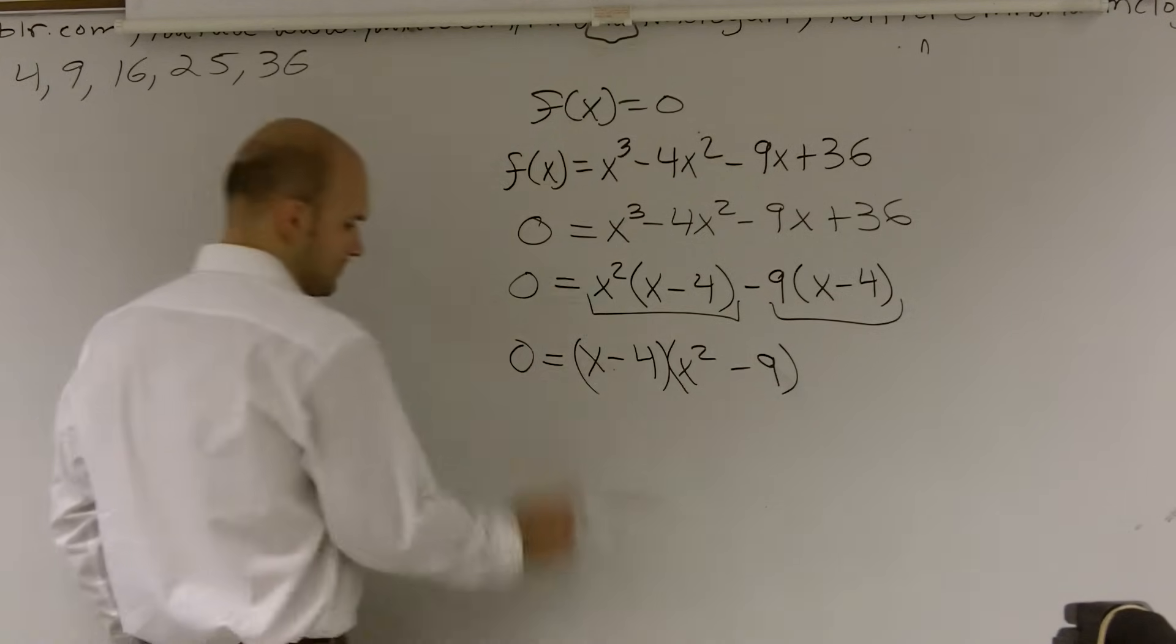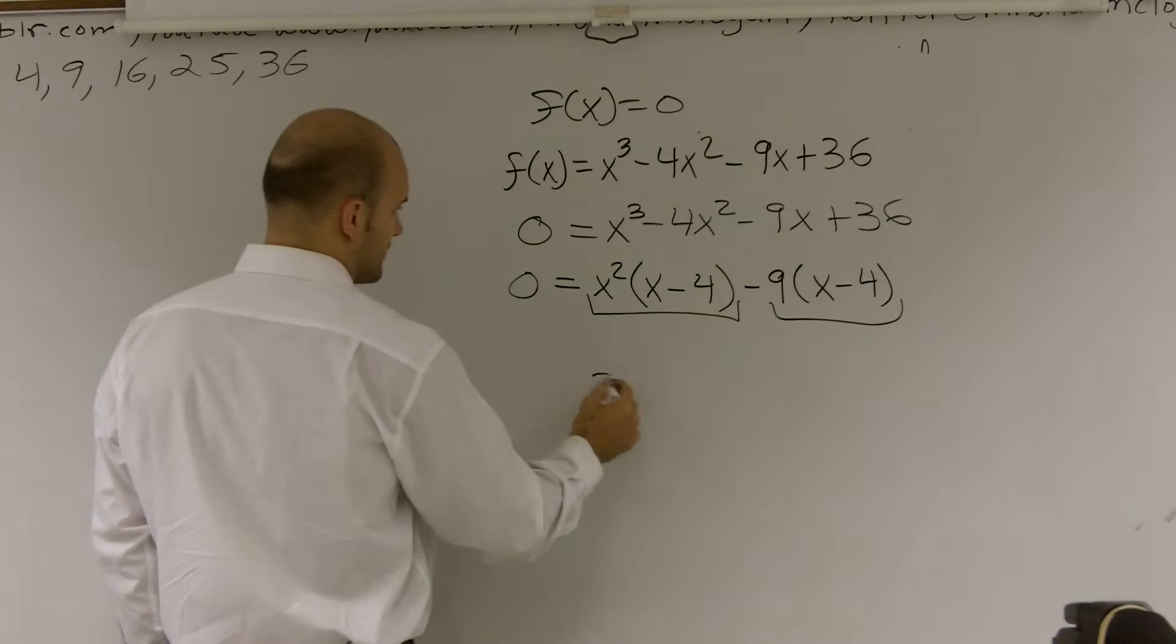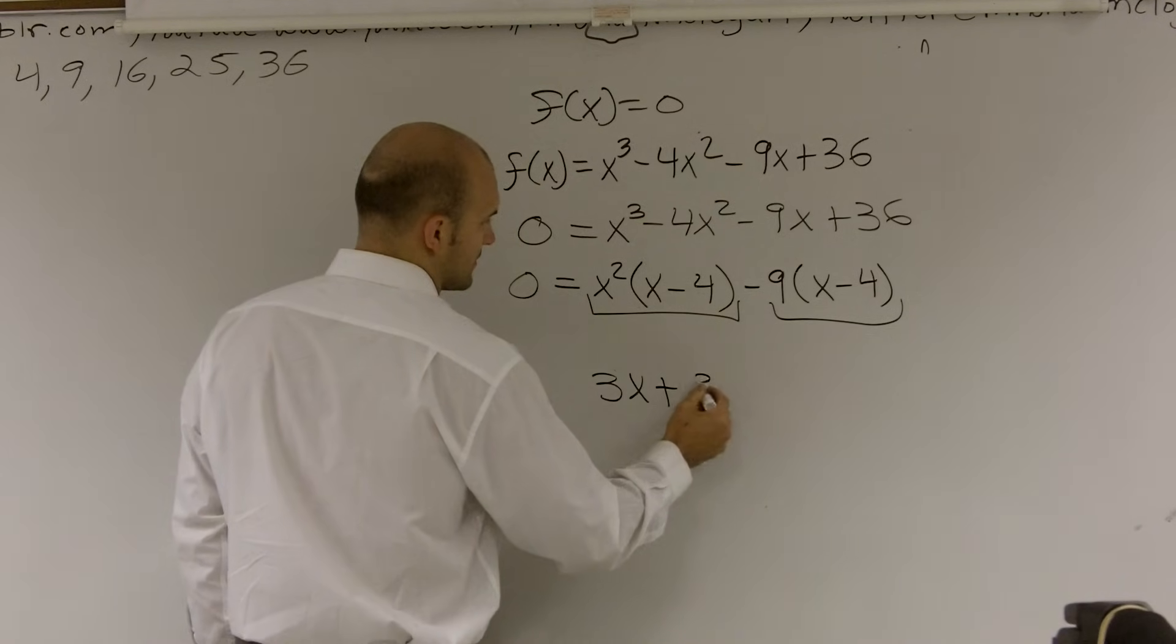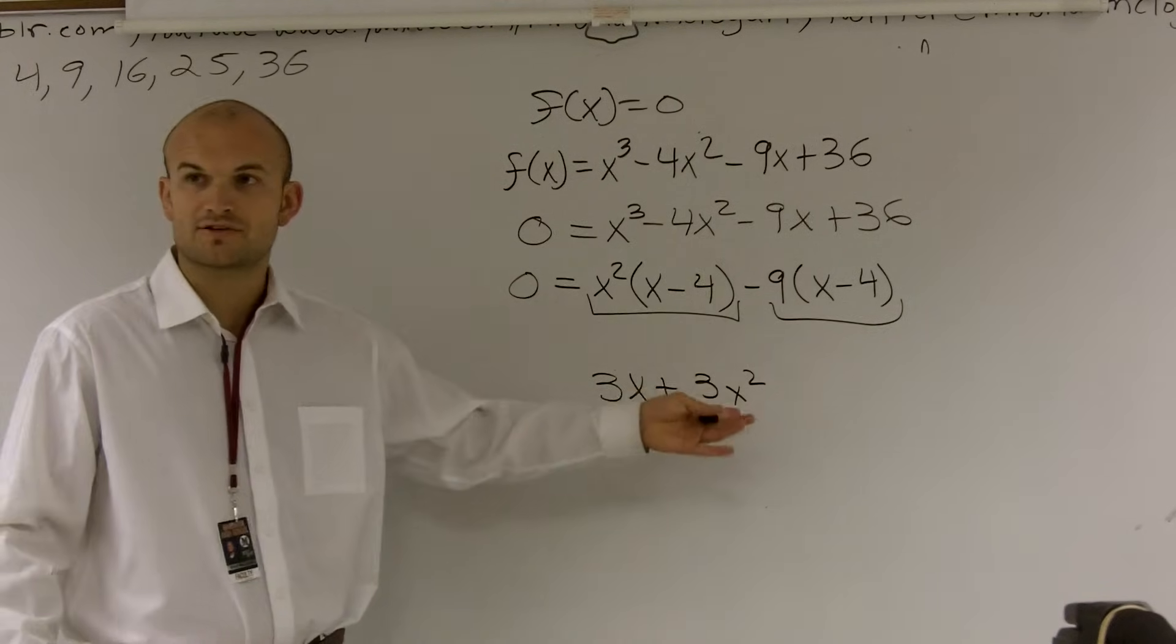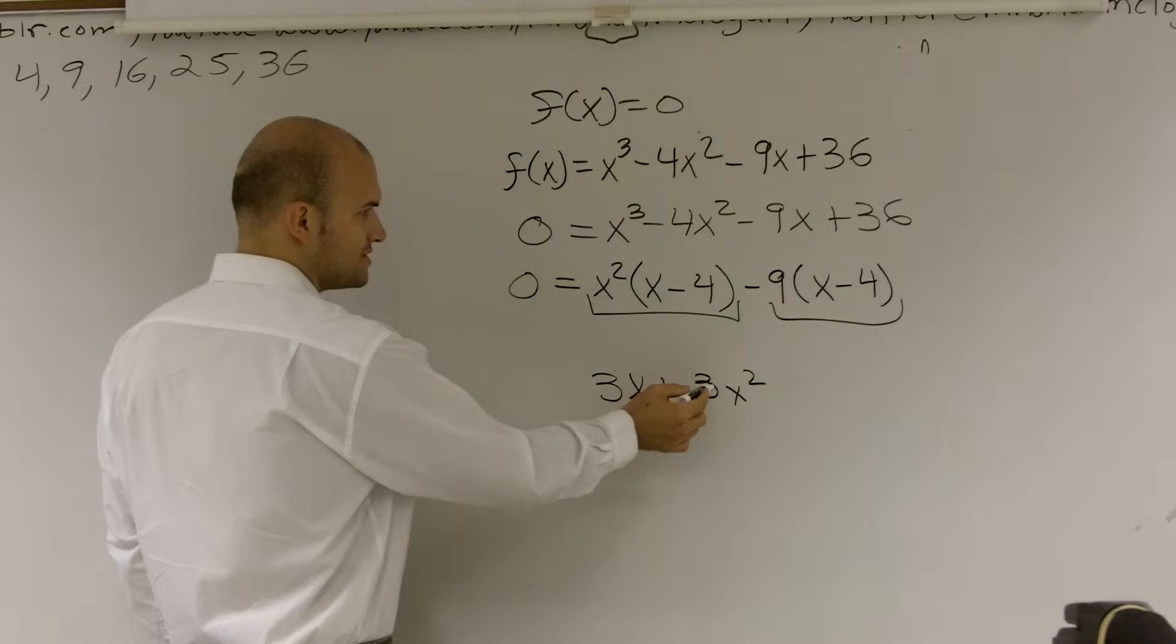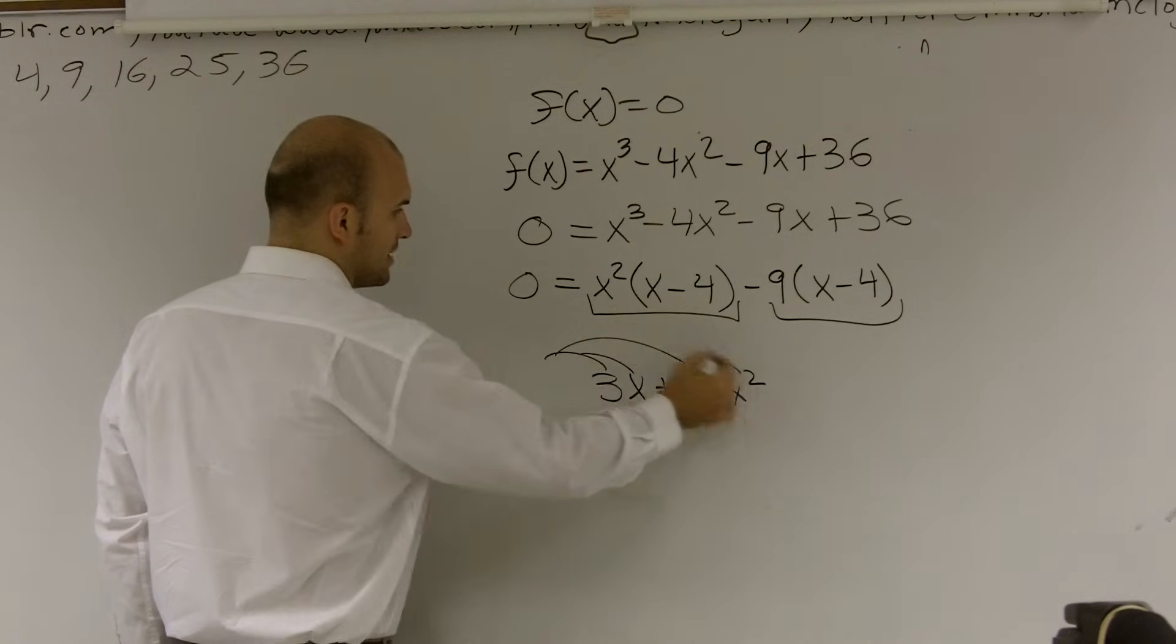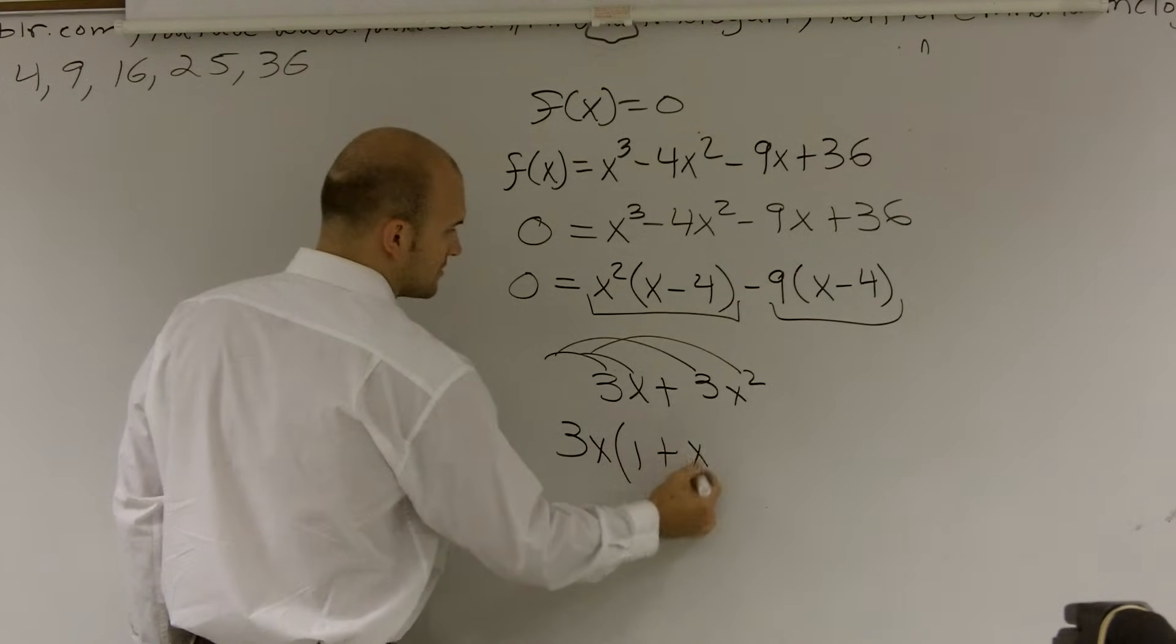OK, what I'm doing is, it's like 3x plus 3x squared, right? What can you factor out of this? 3x. You can factor out 3x, right? So what I'm doing is I'm taking a 3 out of both of them, right? And I'm taking an x out of both of them. So you're left with, what's left? Well, that's 1 plus x, correct?